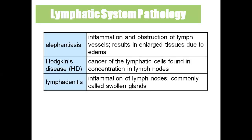Elephantiasis is inflammation and obstruction of lymphatic vessels resulting in enlarged tissue due to edema. If you see their hand or leg it will be very large, looking like an elephant leg — that's why we call it elephantiasis. Hodgkin's disease is cancer of the lymphatic cells, particularly concentrated in the lymphatic nodes.